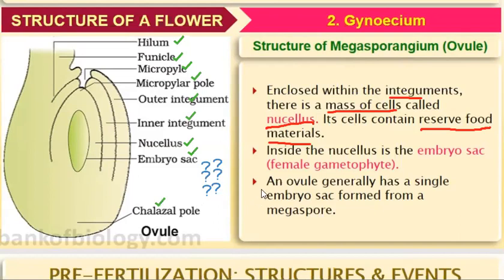The outer and inner integuments are the coverings that protect the ovule. The nucellus is the part that provides nutrition. The embryo sac is the female gametophyte where the female gametes are produced. The chalazal pole is opposite to the micropylar pole. An ovule generally has a single embryo sac formed from a megaspore.